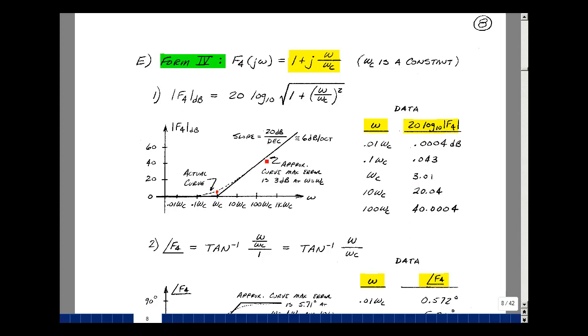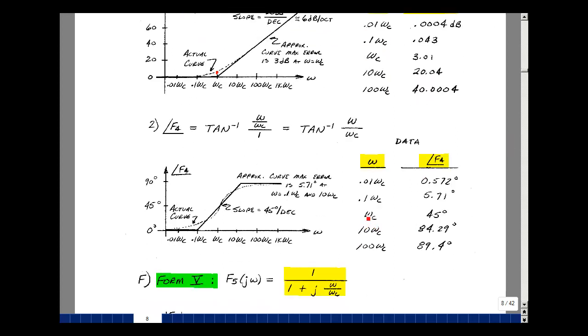What about the angle? The angle is the arctangent of the imaginary term divided by the real term, so that would be the arctangent of ω over ωc. Let's take some data points and see what we get. If ω equaled ωc, we'd be taking the arctangent of 1, which is 45 degrees. If we let ω equal 10 ωc, we're taking the arctangent of 10, which is 84.29 degrees. If this ratio were 100, it would be 89.4. What's happening is the arctangent of infinity is 90 degrees, so we're approaching 90 degrees. We could, one decade above ωc, approximate the data as 90 degrees.